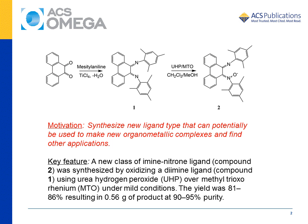Compound 2, shown here, is an example of this new ligand type. We synthesize this ligand in two steps. The first step followed prior literature by reacting phenanthridine quinone with mesitylamine and titanium tetrachloride to produce bis-mesityl-phenanthridine diamine, which is labeled as compound 1.